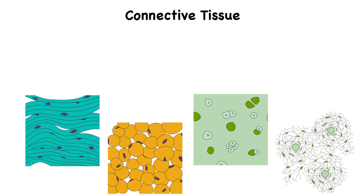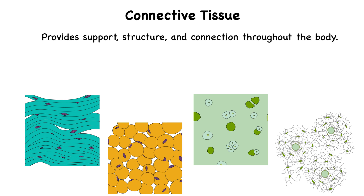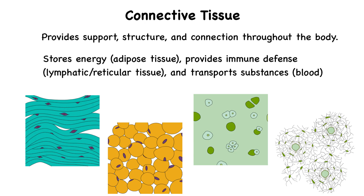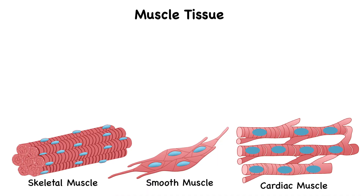The next type of tissue is connective tissue. Connective tissue provides support, structure, and connection throughout the body. Unlike epithelial tissue, it has fewer cells and more extracellular matrix, which includes fibers like collagen and ground substance. It also stores energy — as we see in adipose tissue — provides immune defense as seen in lymphatic tissue, and transports substances as we see in blood.